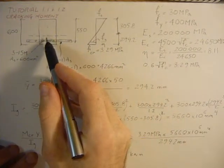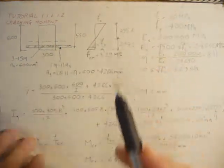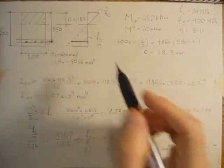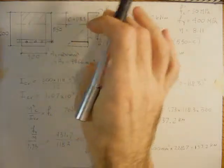We've seen that here. Here for the gross section it was at 305.8, and for the cracked it's 118.3. For those two cases, you'll always get the forces balancing in the section.